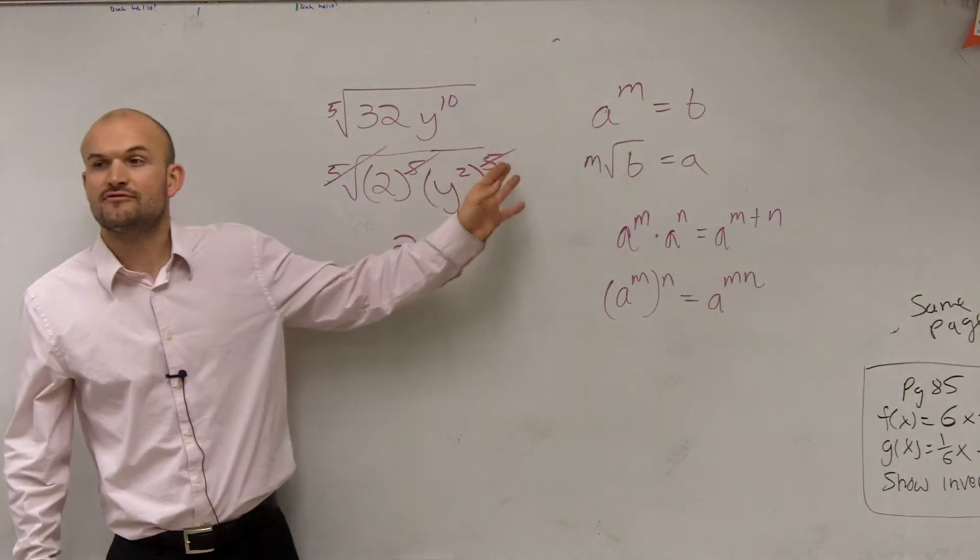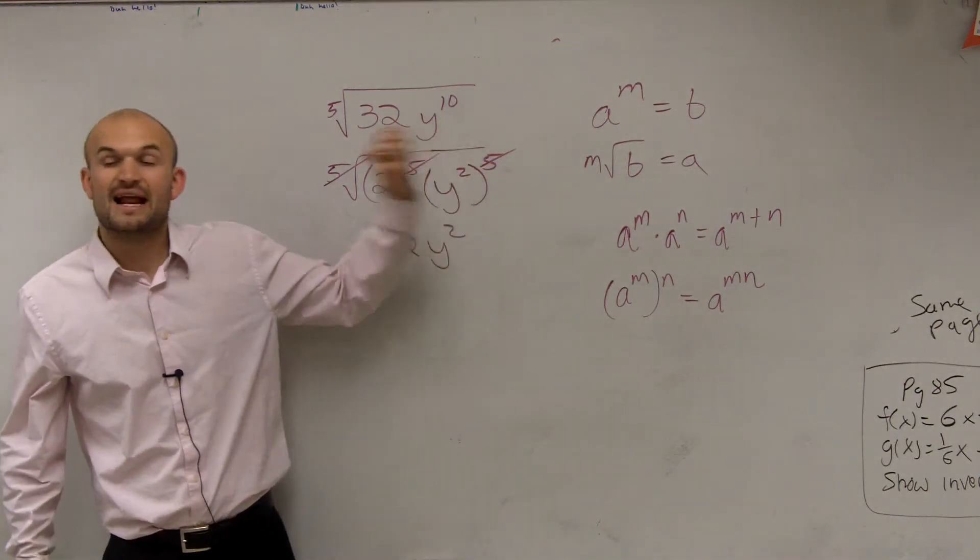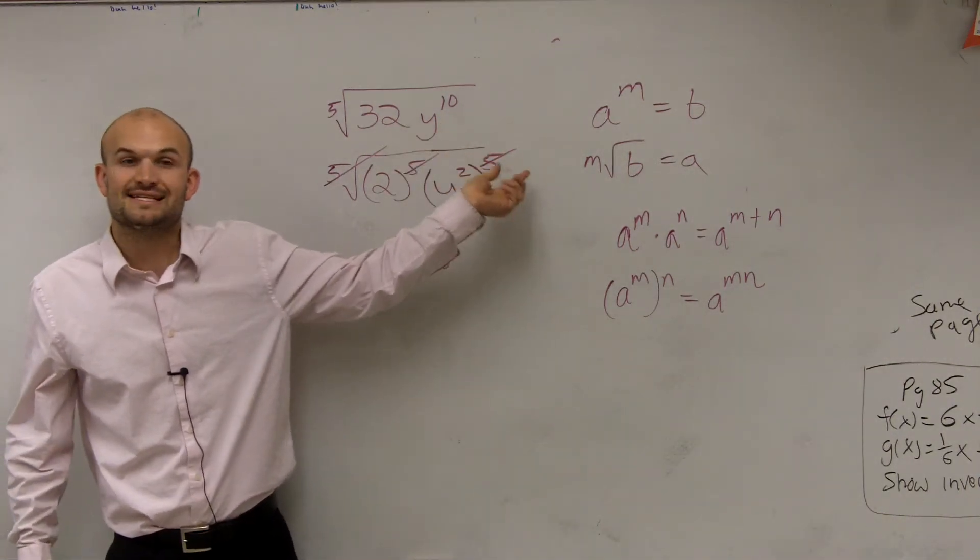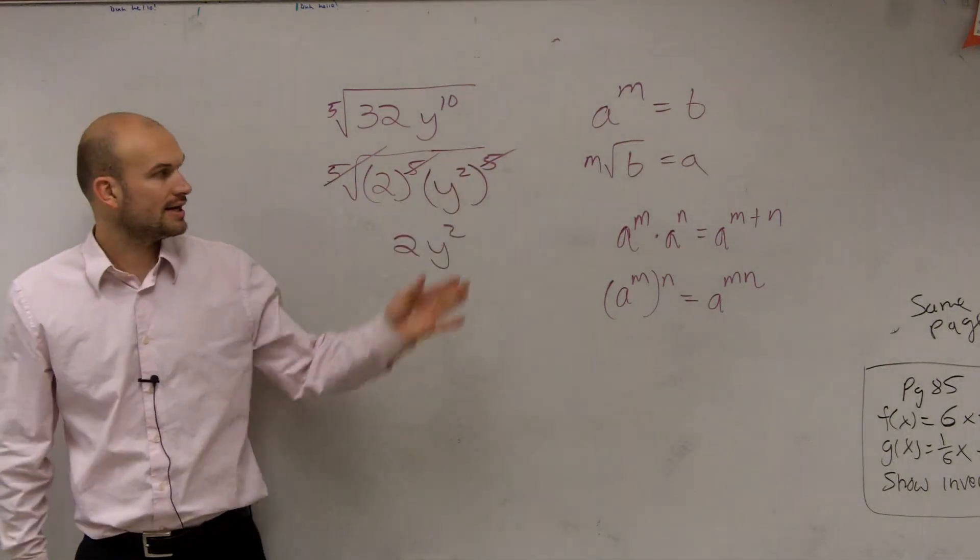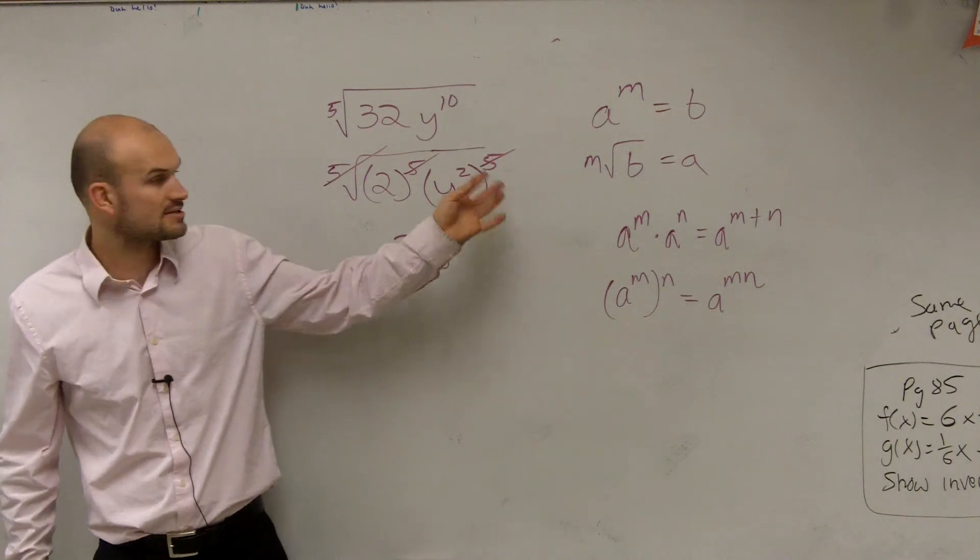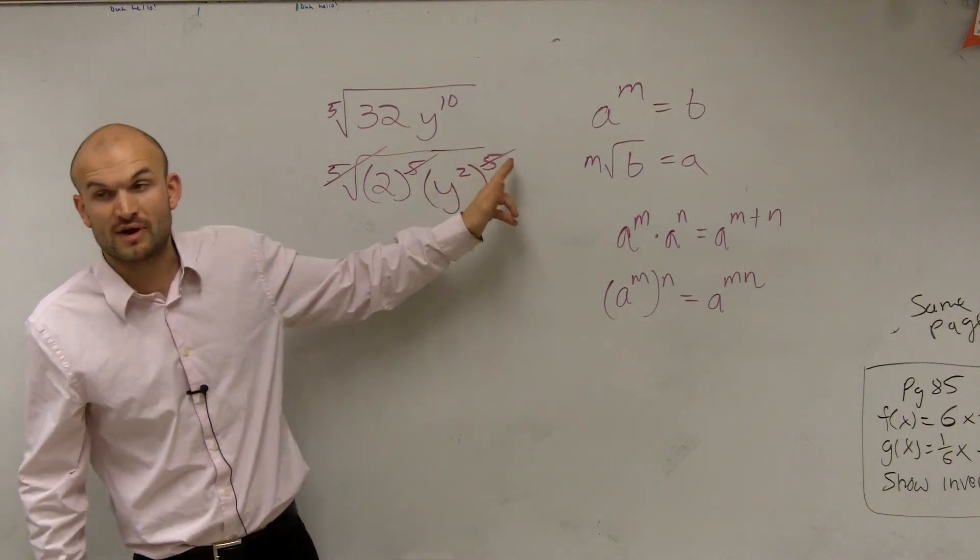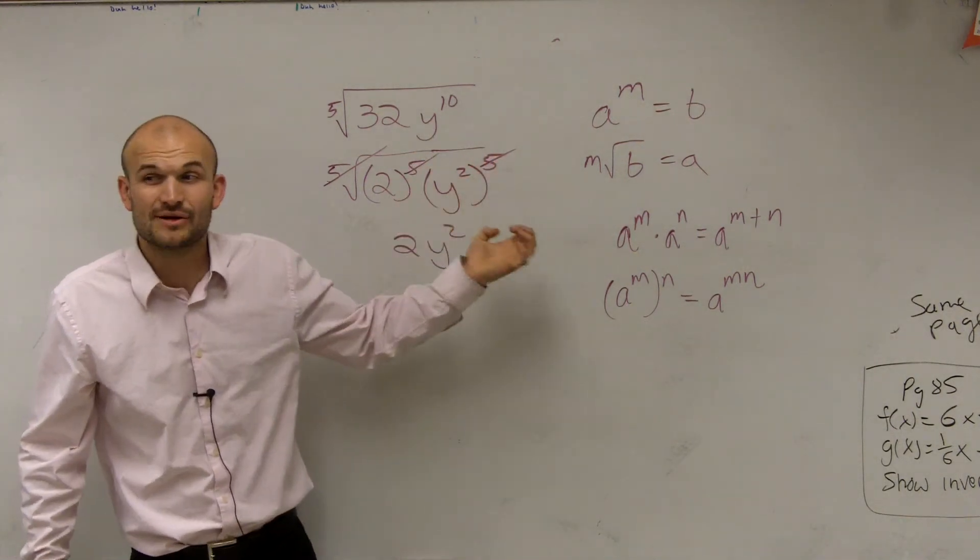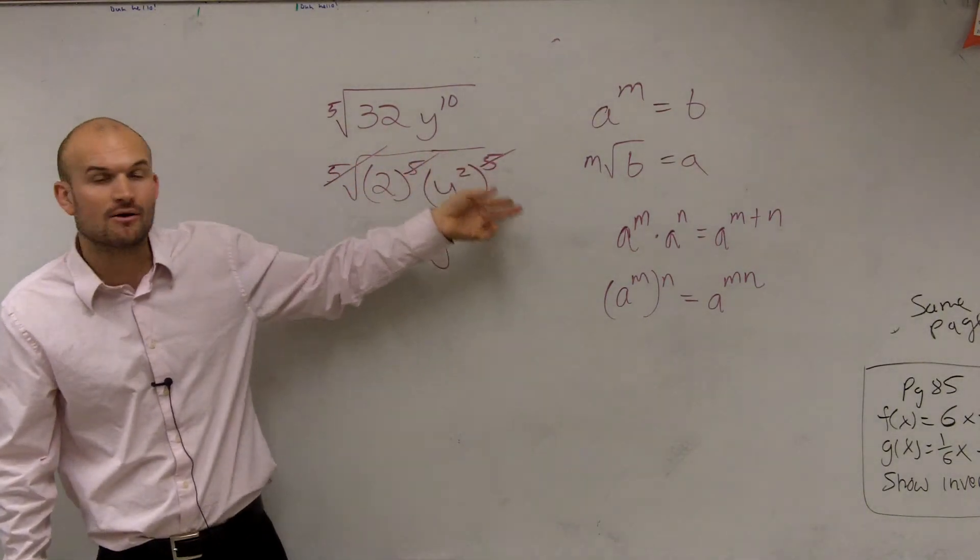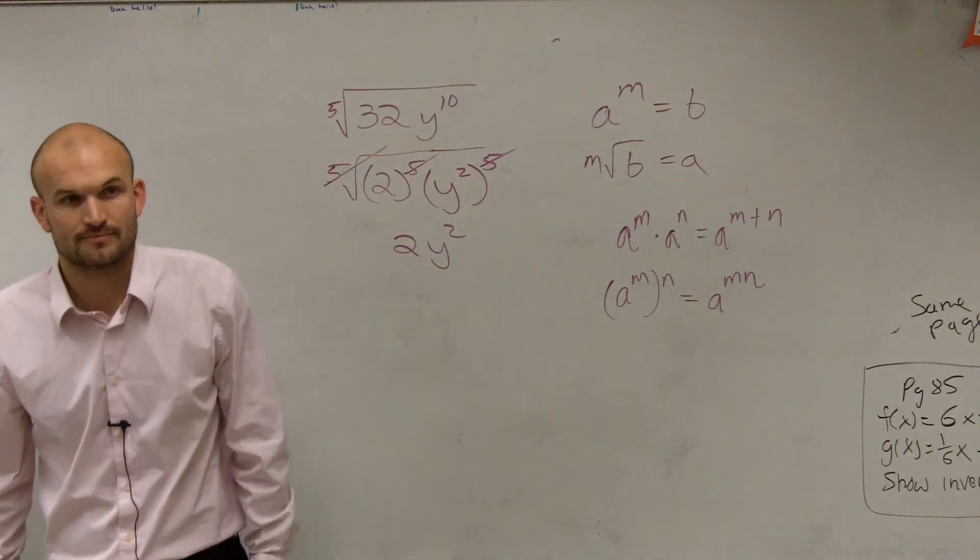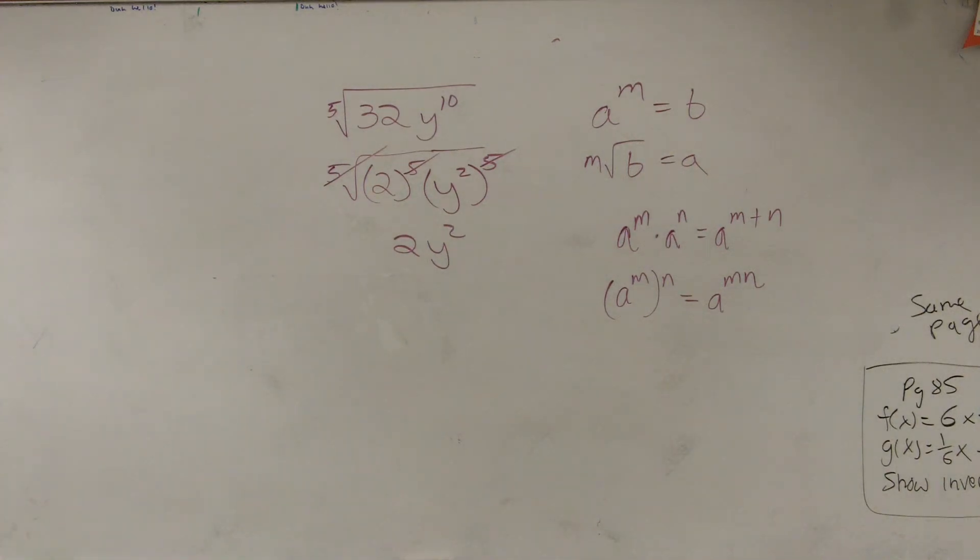Because y squared to the fifth is y to the 10th. But I needed to write it in terms of raising it to the fifth power. I kind of split it up into a multiplication problem, yes, raising it to the fifth power. And I had to raise it to the fifth power so I could undo it with the fifth root. So that's one example.